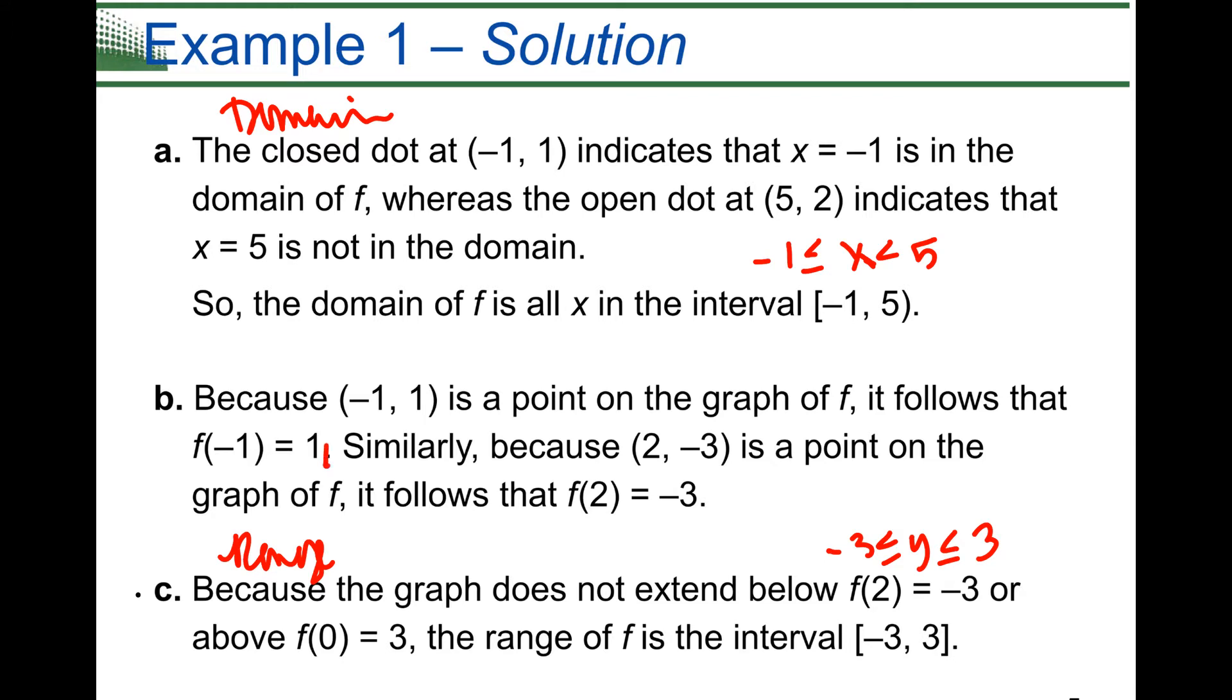Notice this: it can be written as f of negative 1 is equal to 1. So these are equivalent. It's two different ways of writing it. This is your ordered pair and this is using your function notation. And likewise, because 2 comma negative 3 is a point on the graph, it follows that f of 2 is equal to negative 3. So when you're faced with questions like this and they say find f of 2 or f of negative 1, you're just going to locate that point on the graph and then type in whatever the y value is. Again, these are two equivalents: an ordered pair versus function notation.